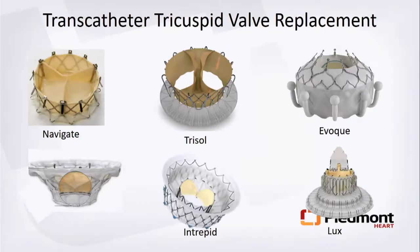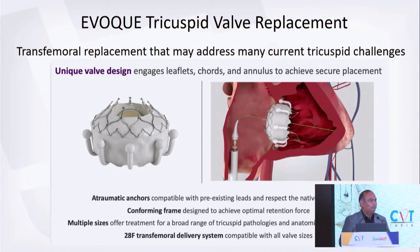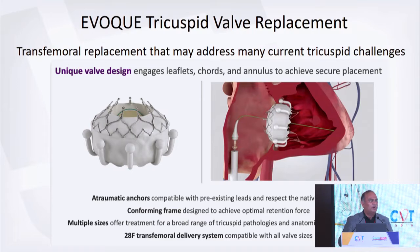I'm going to show a case of EVOQUE — the front runner in tricuspid replacement. It is an Edwards LifeSciences prosthesis: a nitinol frame, self-expanding, with nine atraumatic anchors that capture the leaflets of the tricuspid valve so excessive oversizing at the annular level is not required, though some oversizing helps in anchoring. It comes in three sizes: 44, 48, and 52mm. It's a 28 French transfemoral delivery system with a bovine pericardial tri-leaflet valve.